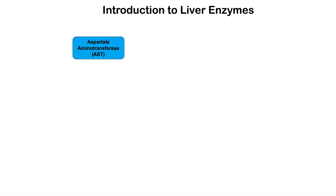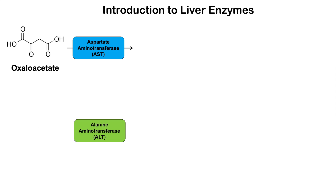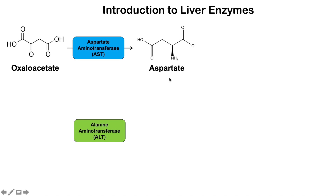Liver enzymes are aspartate aminotransferase (AST) and alanine aminotransferase (ALT). What aspartate aminotransferase does is it takes oxaloacetate, adds an amino group to it, and makes aspartate. It can also do the opposite — remove the amino group from aspartate to form oxaloacetate. It has reverse roles and is important in the malate-aspartate shuttle.